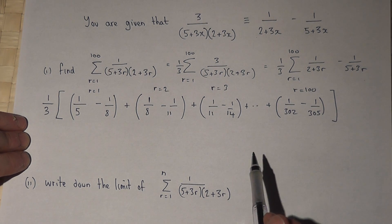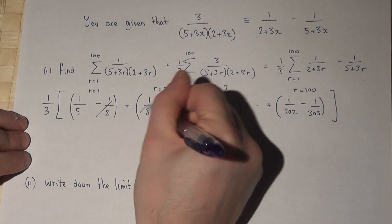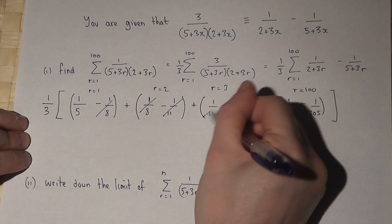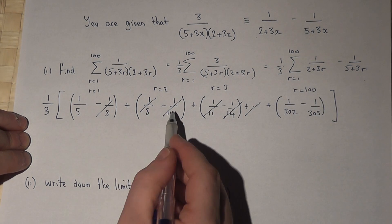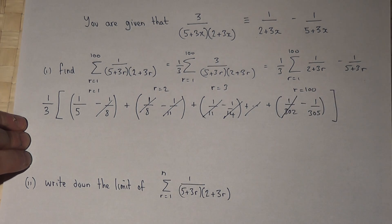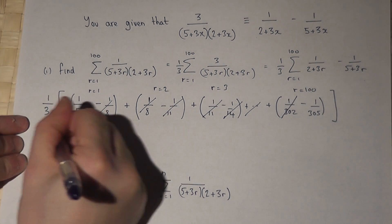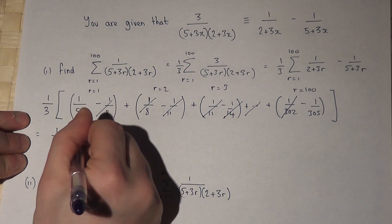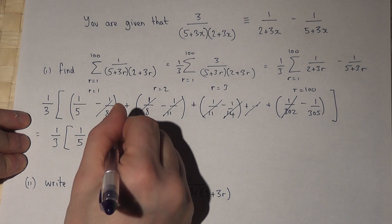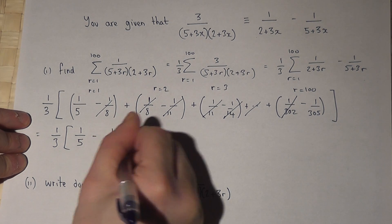What we observe is that all these inner terms cancel off, and they keep on going. The last and the first, they all go. So all we're left with in the end is 1 third. The 1 fifth remains there, take away 1 over 305.